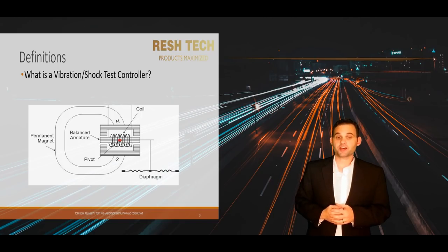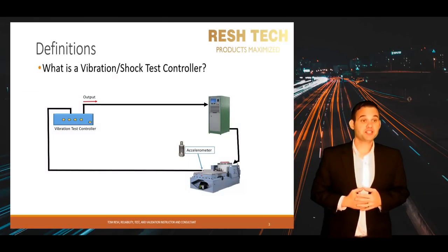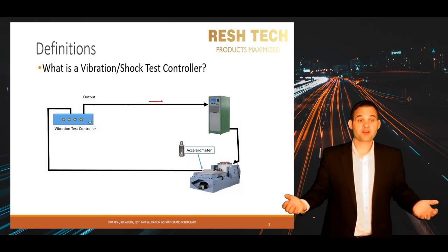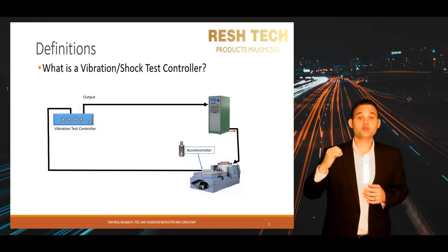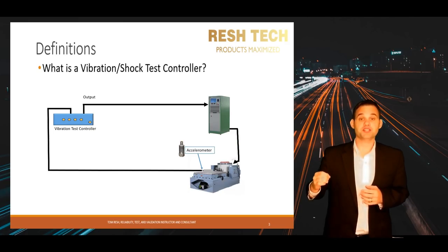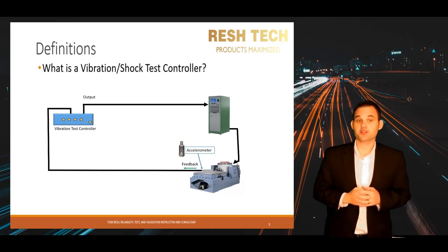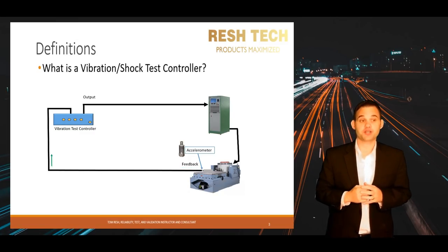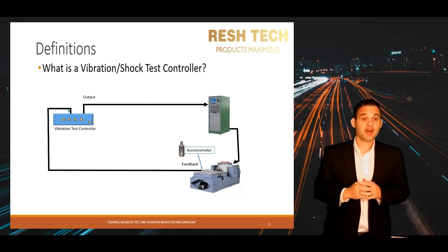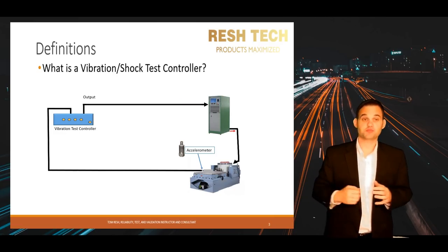The accelerometer can be thought of as your ears and senses the music. The test controller uses a closed-loop strategy that uses feedback to make adjustments to the output signal from the vibration test controller to the amplifier, and ultimately converts it to mechanical energy and movement on the vibration test system. In other words, a closed-loop system uses feedback to make adjustments to the output signal.